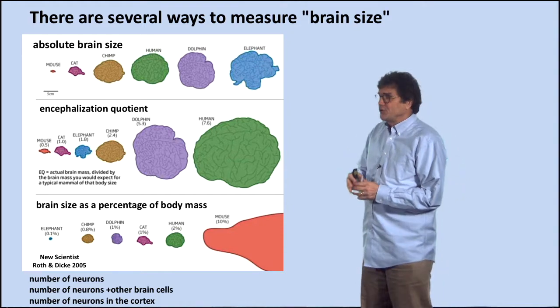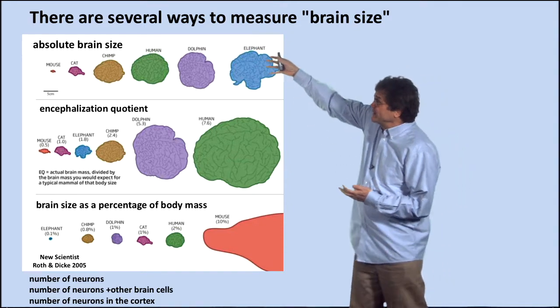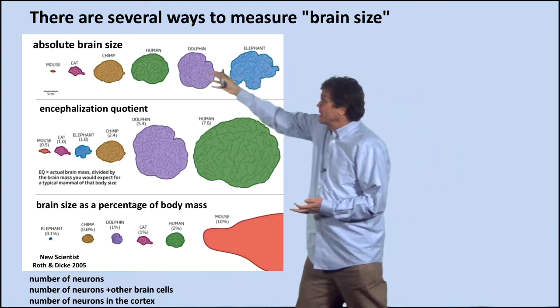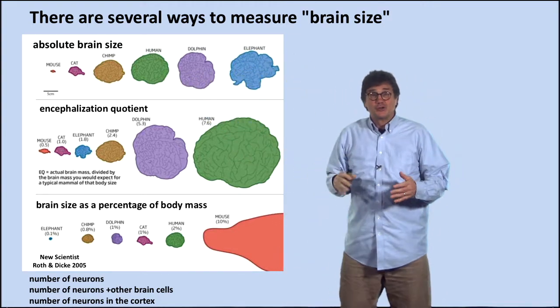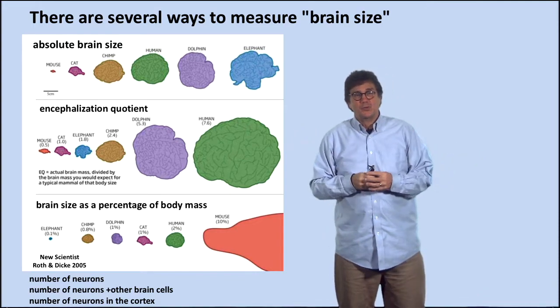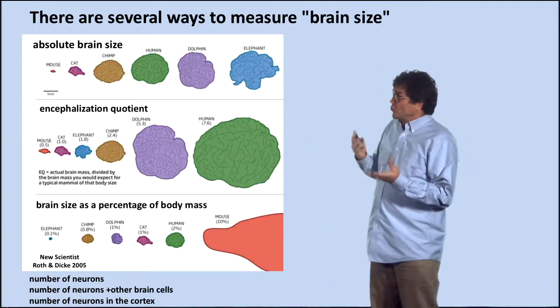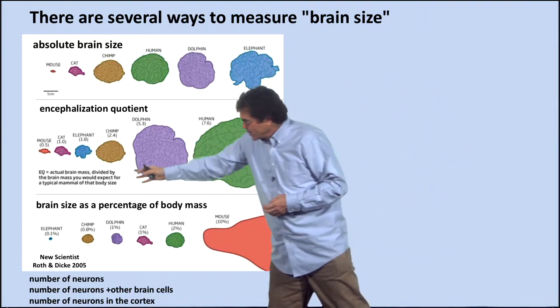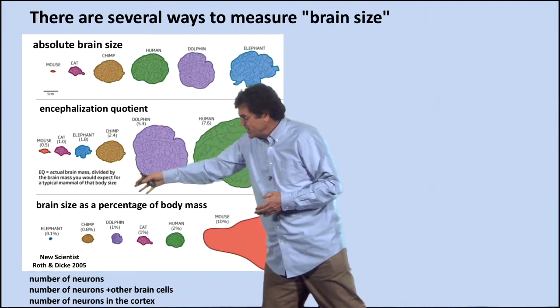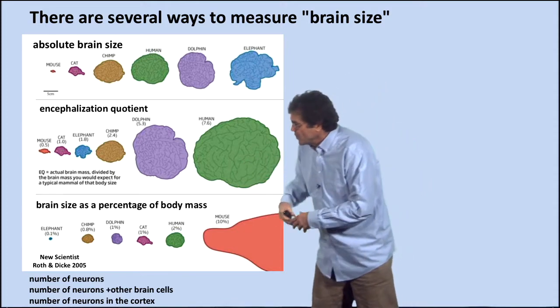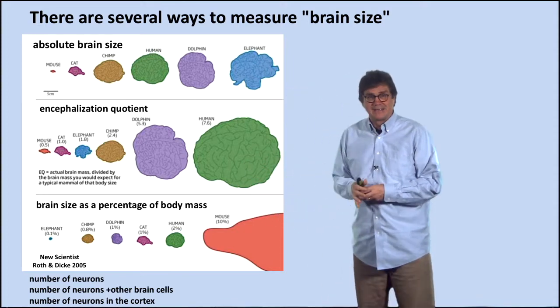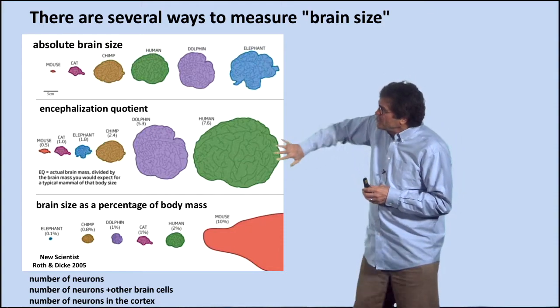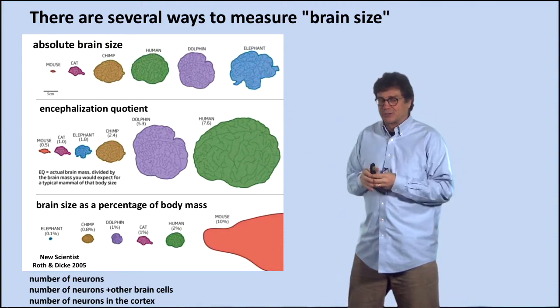For example, you could talk about absolute brain size, in which case elephants have bigger brains than human beings. So elephants would be smarter if that's how you measured it. You could talk about encephalization quotient, which is essentially defined here as the actual brain mass divided by the brain mass you would expect for a typical mammal of that body size. When you do that, then you get humans have the largest encephalization quotient.